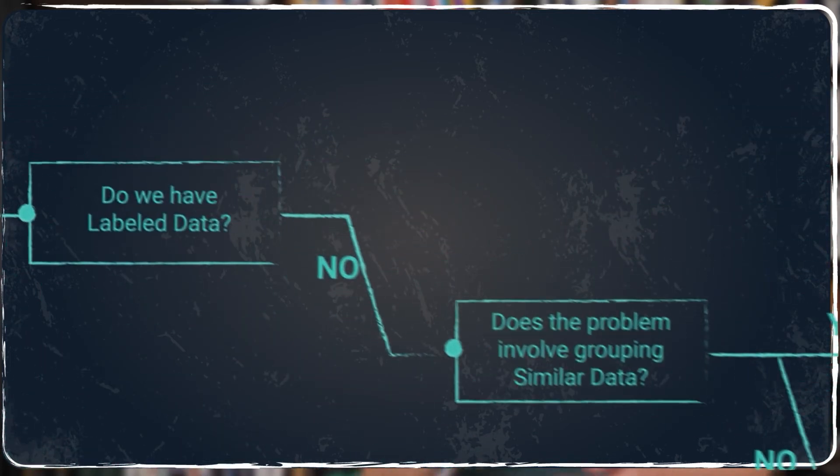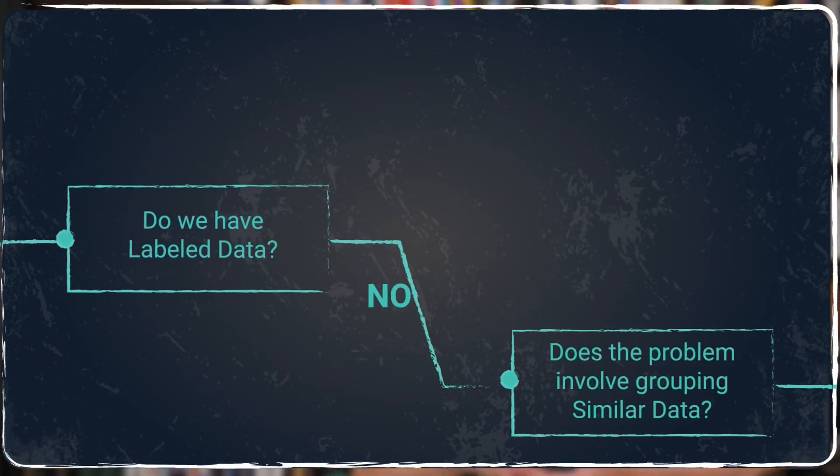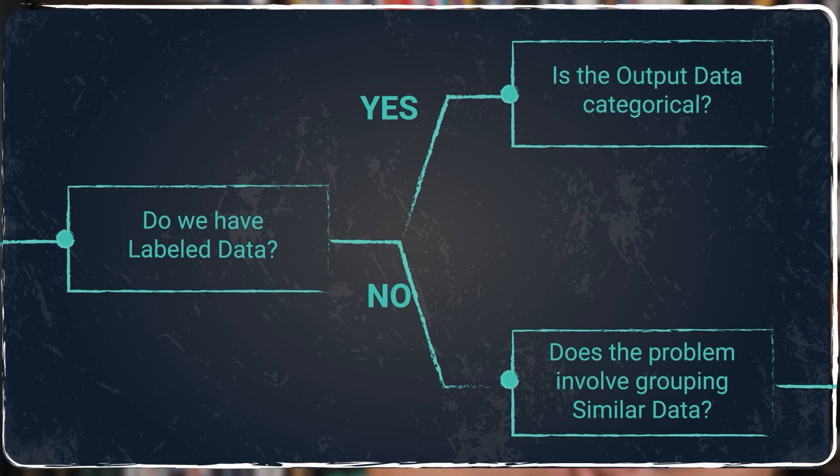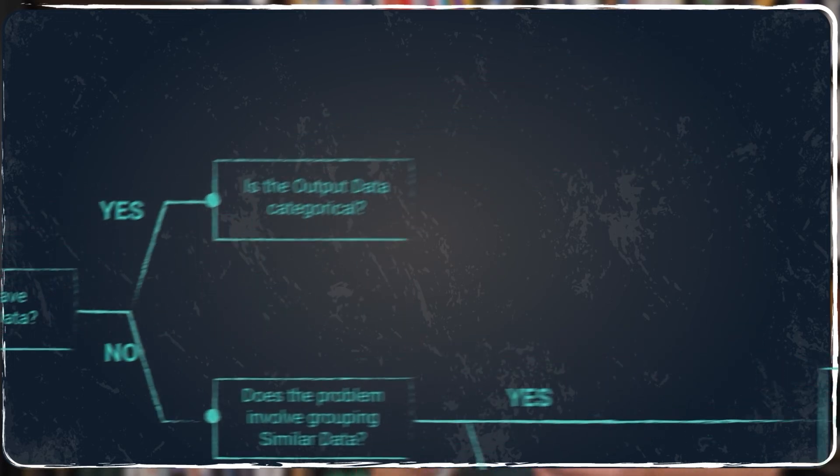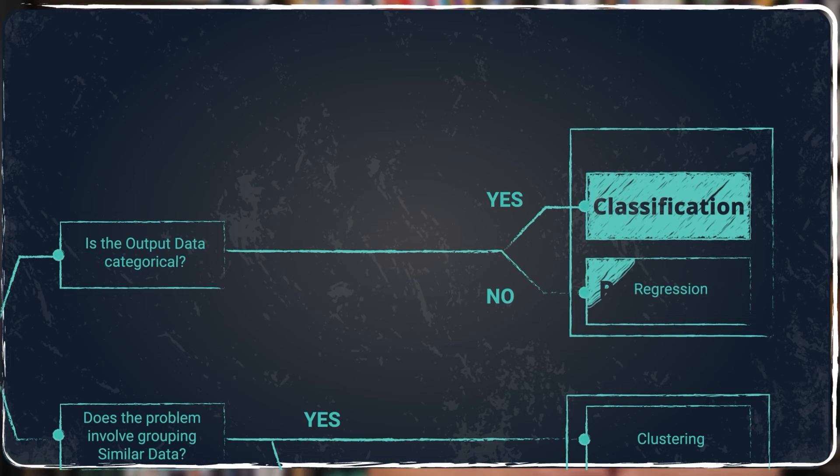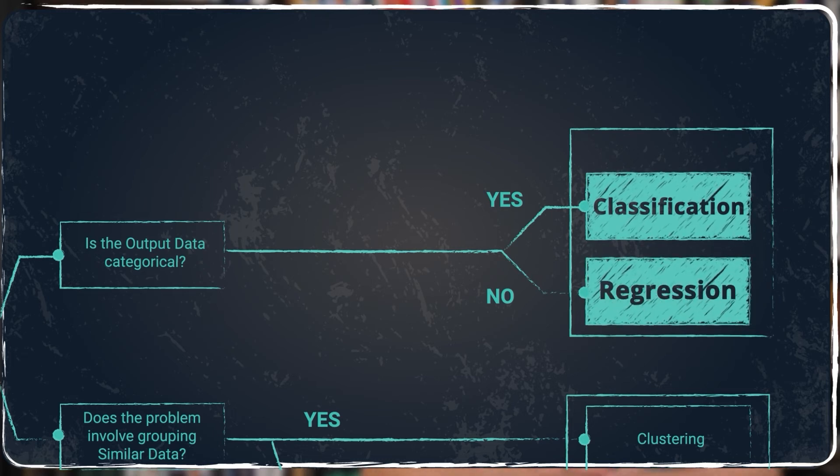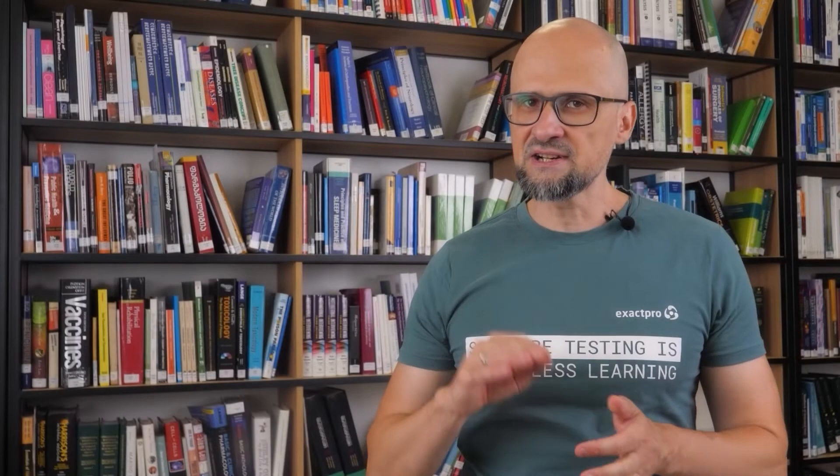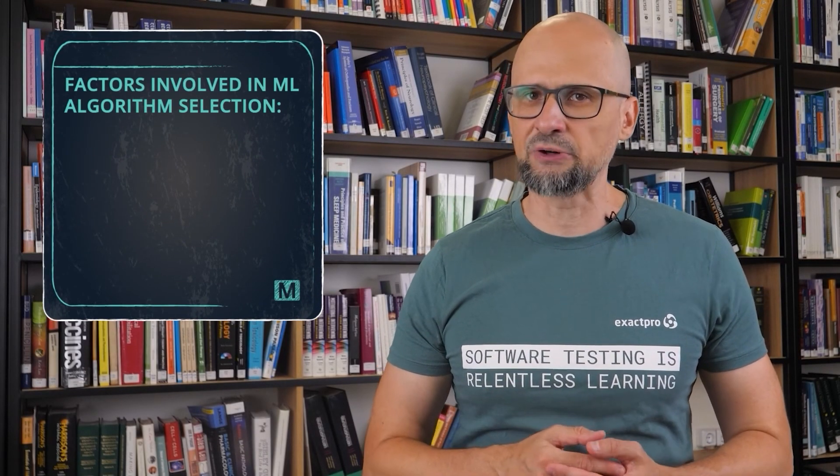Let's go back to the question about labeled data. If our answer is yes, then we ask a question if the output data is categorical. If the output is discrete and categorical, it may be classification. If the output is numeric and continuous in nature, it may be regression. Regression and classification suggest there is an output label, which means it may be supervised learning.